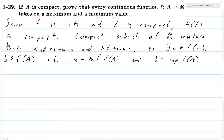So A is the greatest lower bound of F of A and it's contained in F of A, and B is the least upper bound of F of A and it's contained in F of A.